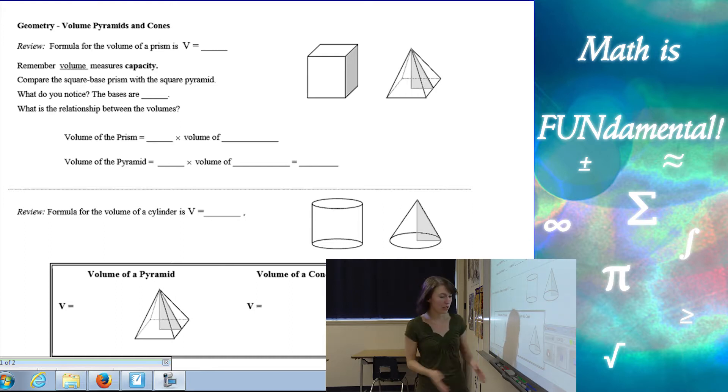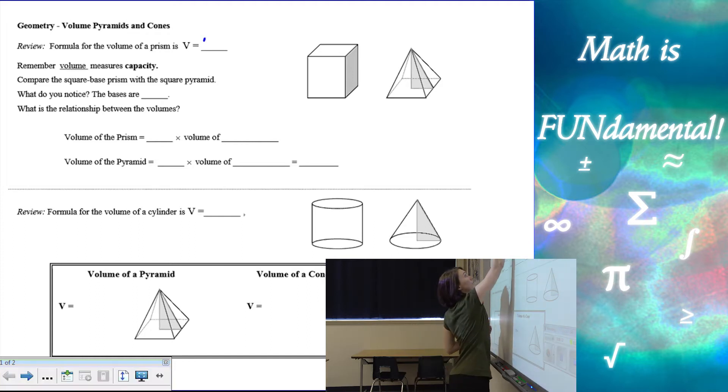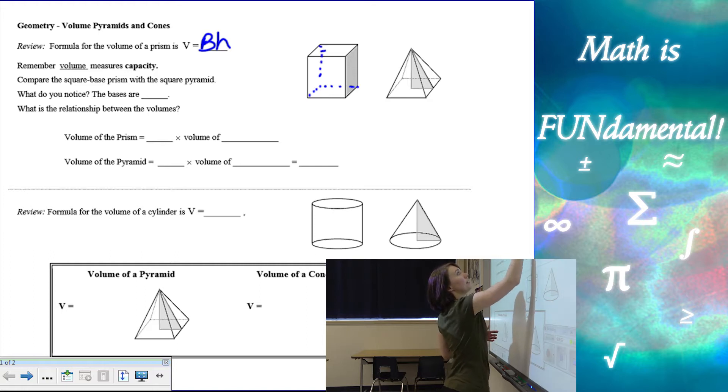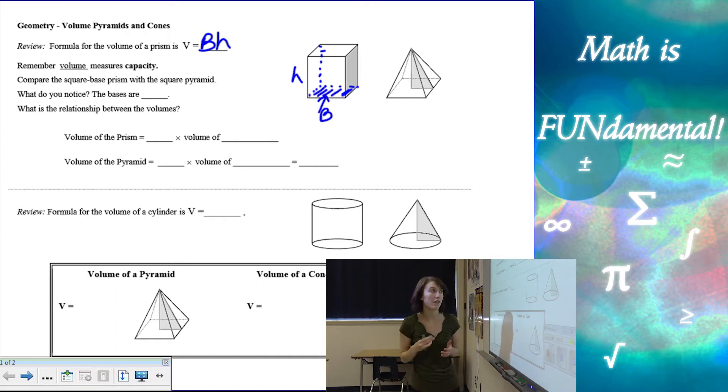So a little review. In the last video, we talked about the formula for volume of a prism and cylinder. Volume of a prism or cylinder is area of the base times the height. So for example, if I have this prism here, then I could find the volume by taking area of the base times the height of the prism, or the length in between the bases.